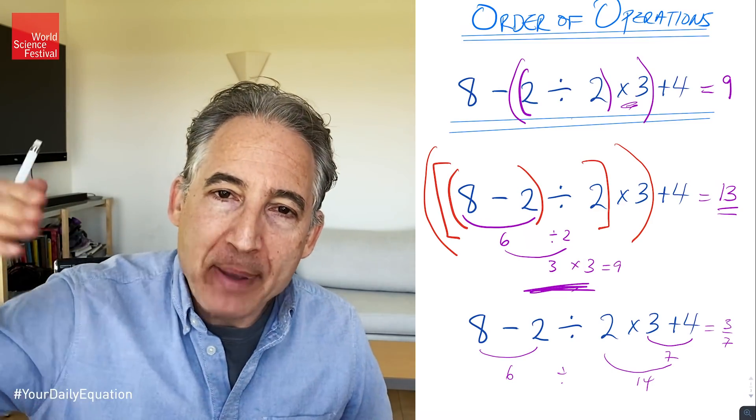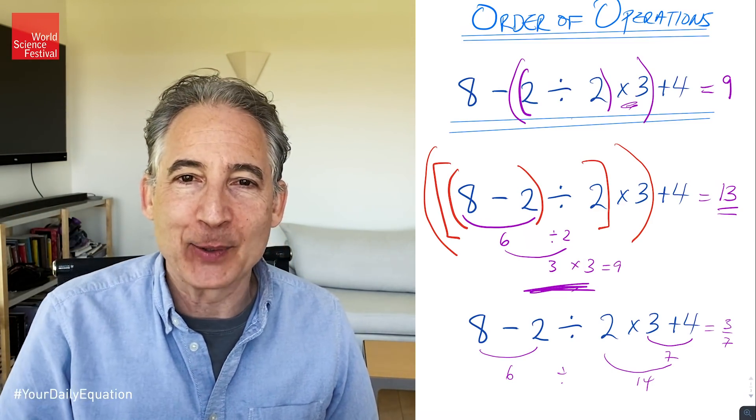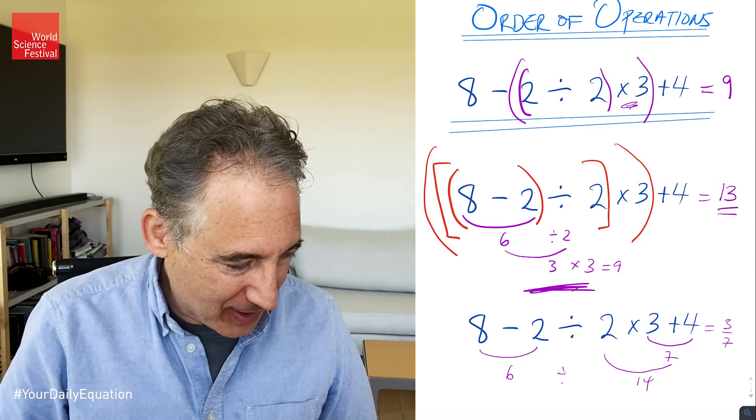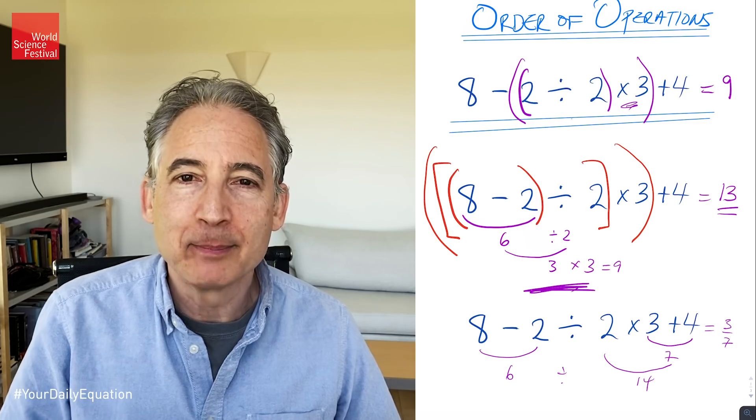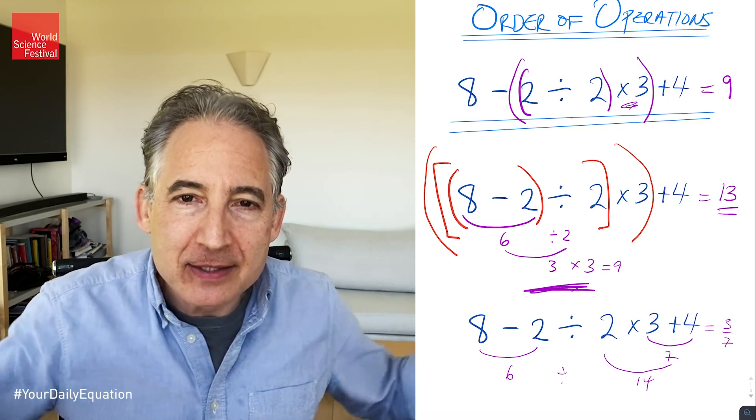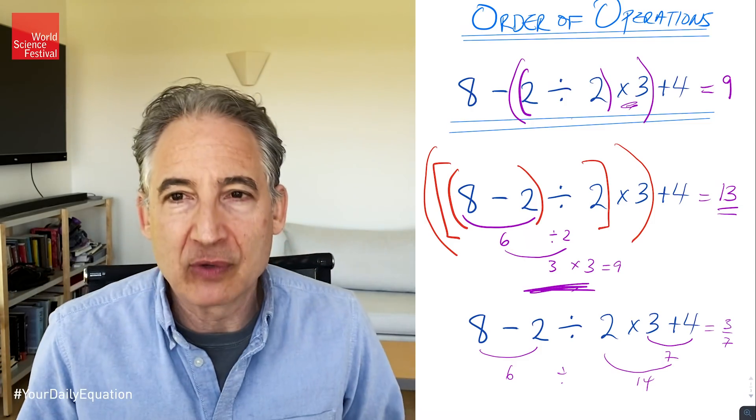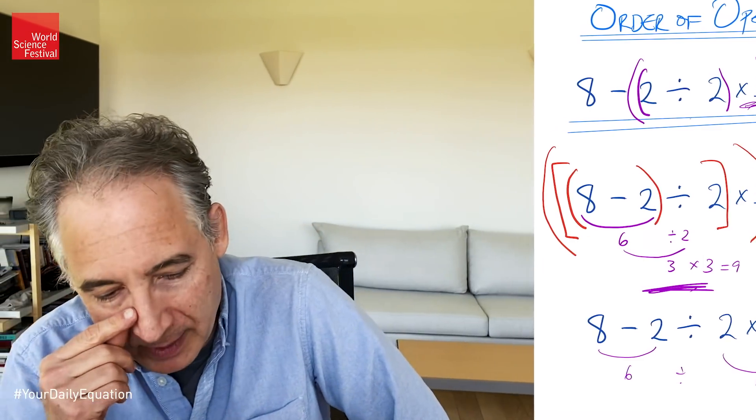So we get our 8 minus 2 is 6, divided by 2 is 3, times 3 is 9, plus 4 is equal to 13. And that's it. No PEMDAS necessary. We just make certain that our mathematical sentences are clear by using parentheses to bracket those operations that we want to happen first, or second, or third, and so forth. So what's my gripe here?